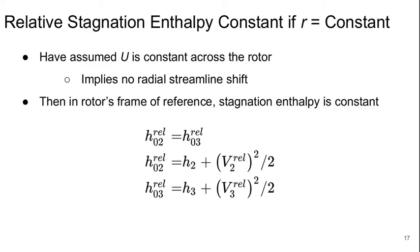Up to now, we've assumed that the blade speed u is constant across the rotor, and this means that we're assuming that there's no radial streamline shift.